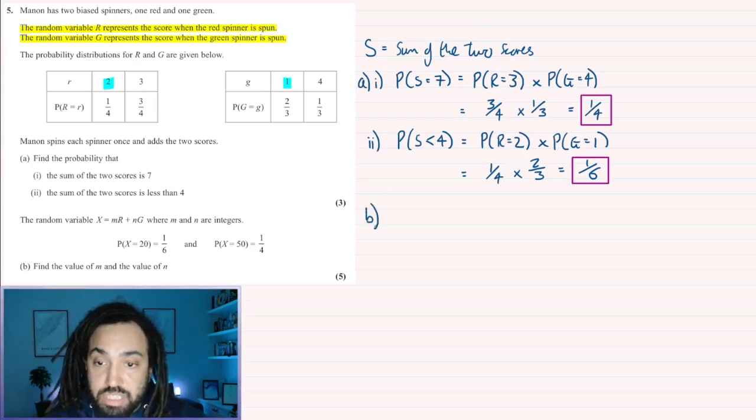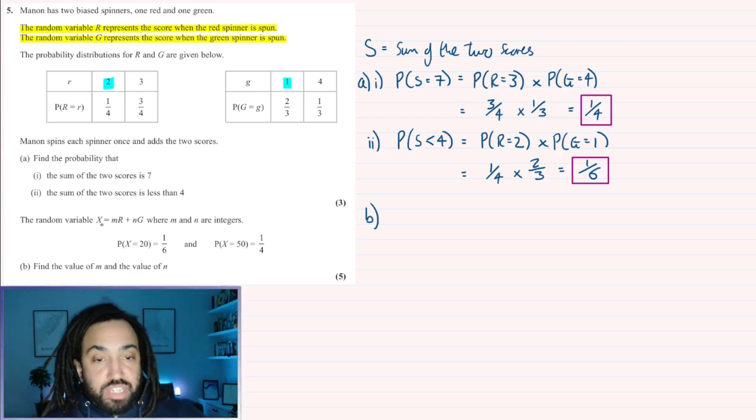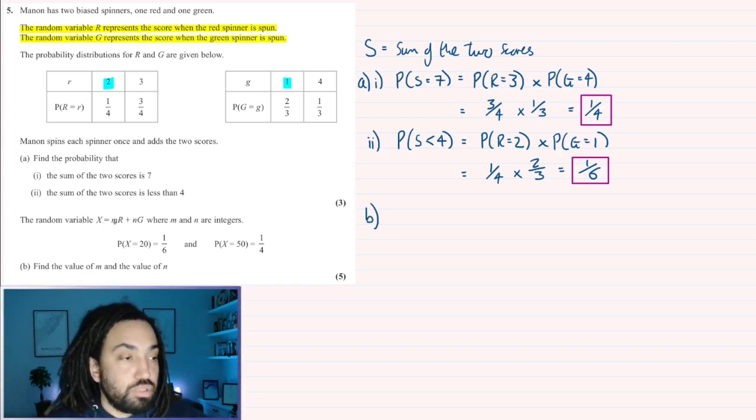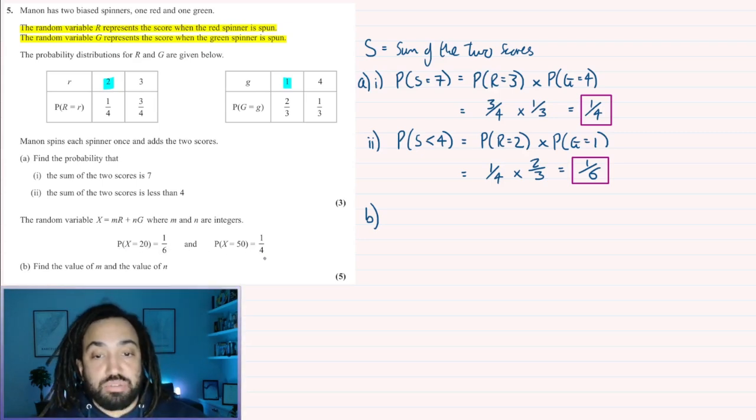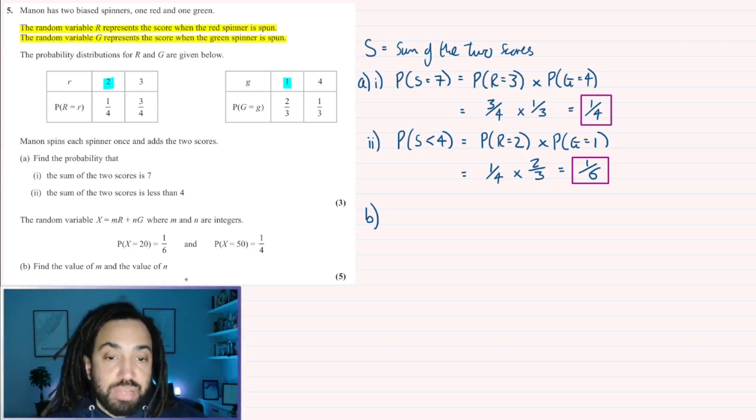Now the tricky bit, part B. It says the random variable X is equal to M times R plus N times G, where M and N are integers. We get the probability that X is 20 equals a sixth and the probability that X equals 50 equals a quarter. Find the value of M and N.